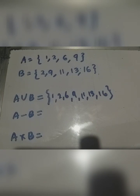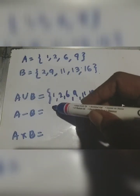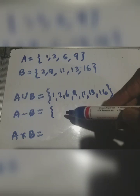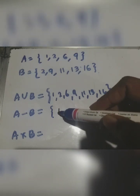A minus B: we delete the elements of B from A. A minus B = {1, 6}.